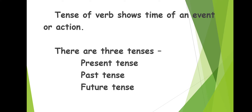There are three tenses: the first one is present tense, the second one is past tense, and the next one is future tense. Under these three, we have sub-points like simple present tense, simple present continuous tense, simple past, simple past continuous, simple future, and simple future continuous — there are many things. Today we will be dealing with only what present tense is, what past tense is, and what future tense is.